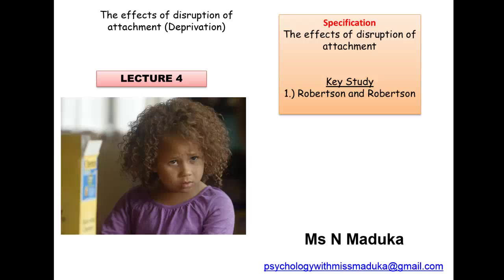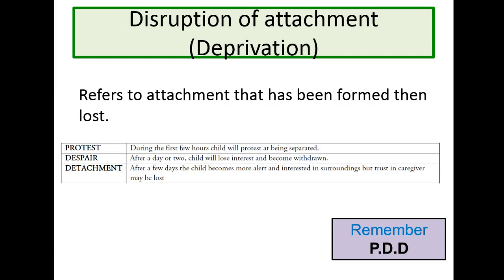Welcome to lecture four. We're going to be speaking about the effects of disruption of attachment. Disruption can also be known as deprivation. In terms of what we mean by deprivation or disruption of attachment, it is when you've had some type of attachment in your life — you've developed a bond with your primary caregiver — but then, because of reasons like having to go into hospital for a short period of time, it's been disrupted somehow.